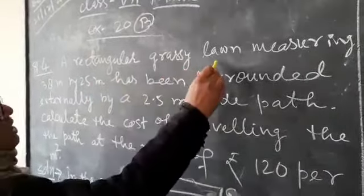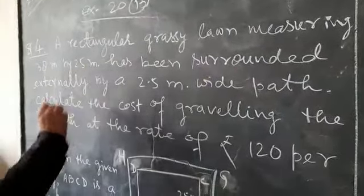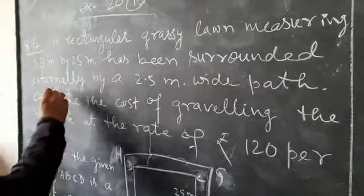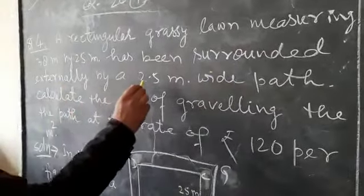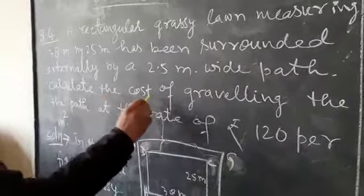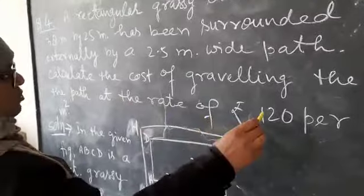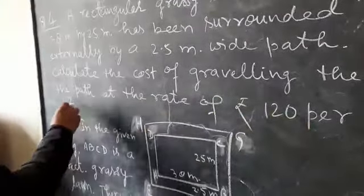A rectangular grassy lawn measuring 38 meter by 25 meter has been surrounded externally by a 2.5 meter wide path. Calculate the cost of graveling the path at the rate of rupees 125 per square meter.